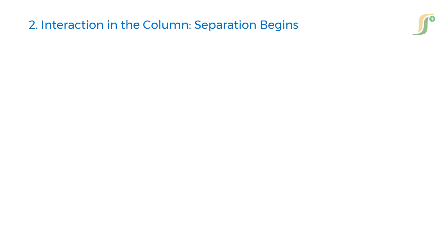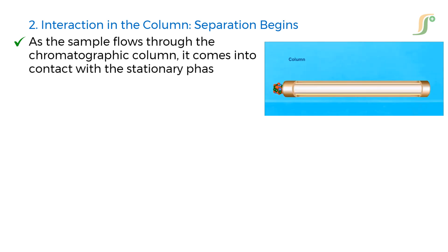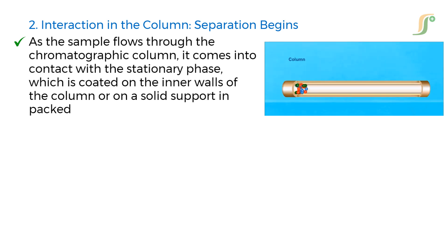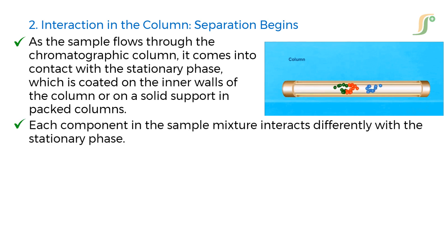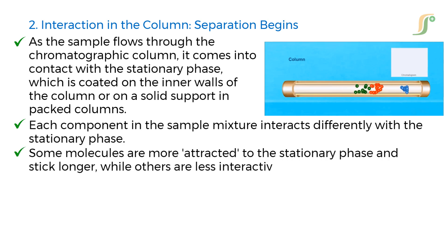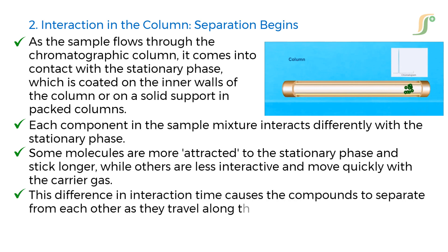Second step is the interaction of the sample in the column. As the sample flows through the chromatographic column, it comes into contact with the stationary phase, which is coated on the inner walls of the column or a solid support in packed columns. Each component in the sample mixture interacts differently with the stationary phase. Some molecules are more attracted to the stationary phase and stick longer, while others are less interactive and move quickly with the carrier gas. This difference in interaction time causes the compounds to separate from each other as they travel along the column.